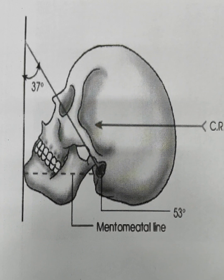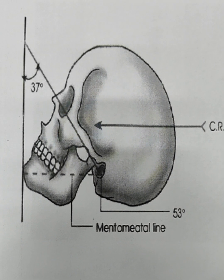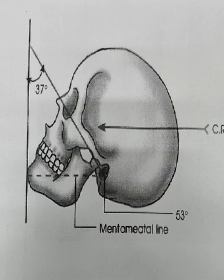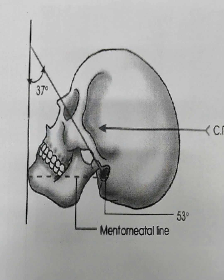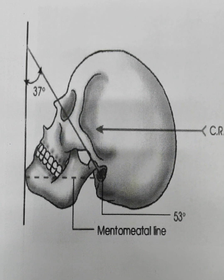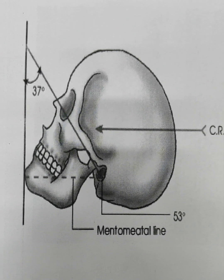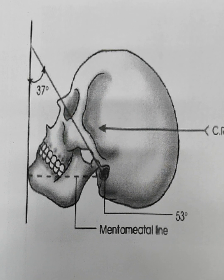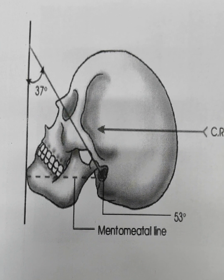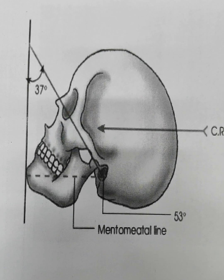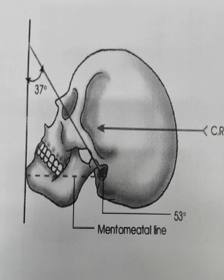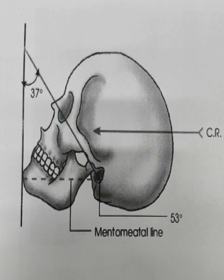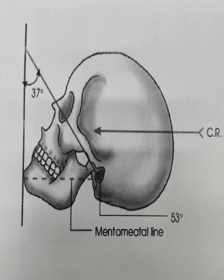In this video we will see the Waters view of the skull. This is the position of the head for taking the Waters view — the head is extended such that the chin touches the X-ray plate, the nose is raised from the X-ray plate, and then the X-rays are passed to see the sinuses.